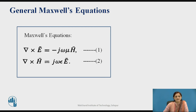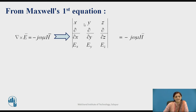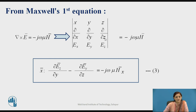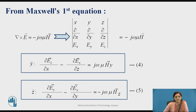Now consider the general Maxwell's equations: del cross E-bar equals minus j-omega-mu H-bar, and del cross H-bar equals j-omega-epsilon E-bar. Consider Maxwell's first equation. Del cross E-bar is the curl operator, which can be written in determinant form. Since the wave propagation is in rectangular coordinate axes, differentiation is with respect to x, y, and z, while the right-hand side remains as is. Solving this determinant gives equation number 3 for the x component. Similarly, the equations for y and z components give equation numbers 4 and 5.